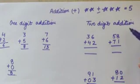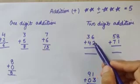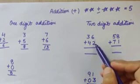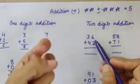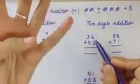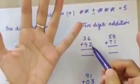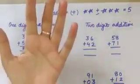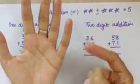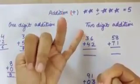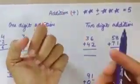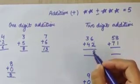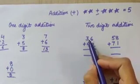Now we will move to 2-digit addition. For 2-digit addition, there are 2 digits on the upper number and 2 digits on the lower number. We will start from the right side. The upper digit is 6, so we will open 6 fingers: 1, 2, 3, 4, 5 and 6. The number below it is 2, so we will count on after 2: 3, 4, 5, 6, 7 and 8. So 6 plus 2 is 8, and we will write 8 here.